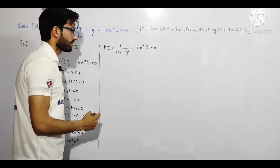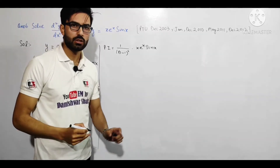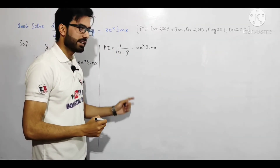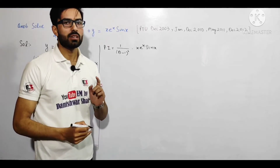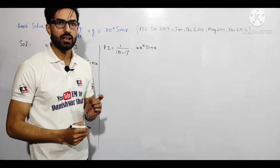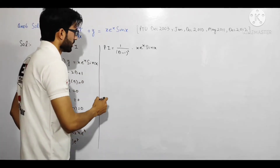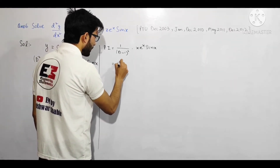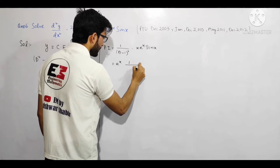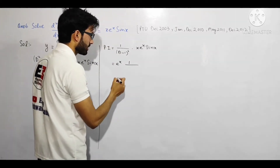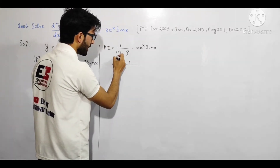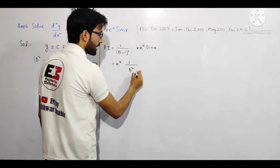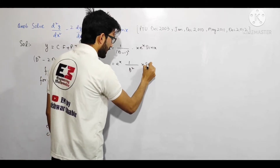Ab jab RHS mein exponential function hota hai, toh exponential shift theorem use karte hain: e^x ko LHS ki taraf le jaate hain aur D ko (D + 1) bana deta hai — jahan a, coefficient of x hota hai. D ki jagah (D+1) karenge toh -1 + 1 aapas mein cut ho jayenge. Bacha sirf D², aur andar x sin x raha.